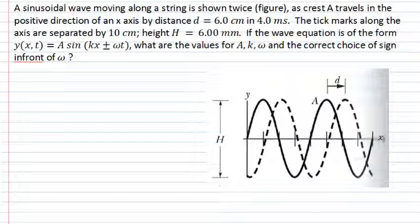The question is asking us to find the constants in this wave equation: A, k and omega, and the sign, whether it's positive or negative, for the traveling wave which is described in the figure shown.